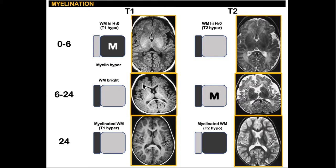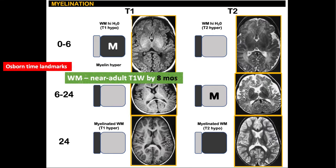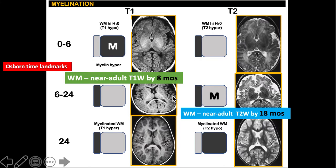Additional buzzwords to remember: near-adult T1 weighted images are seen by 8 months, and near-adult T2 by 18 months. Remember these concepts — we will apply them later.